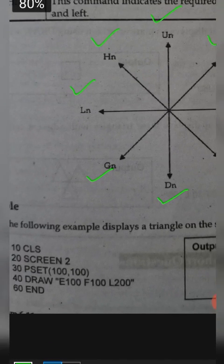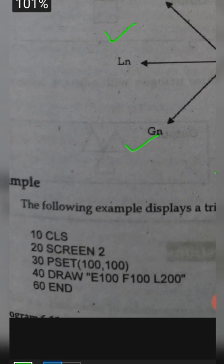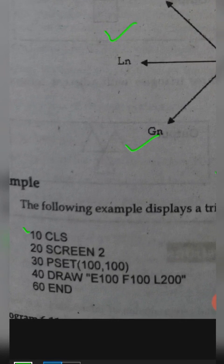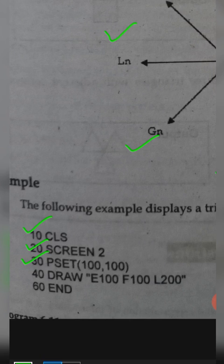Now, the next example shows how to draw a triangle. Line 10: CLS. Line 20: SCREEN 2, which means High Resolution Graphic Mode. Line 30: we use the draw statement to specify the starting point. Line 40: we use the draw statement with commands to draw the lines of the triangle.